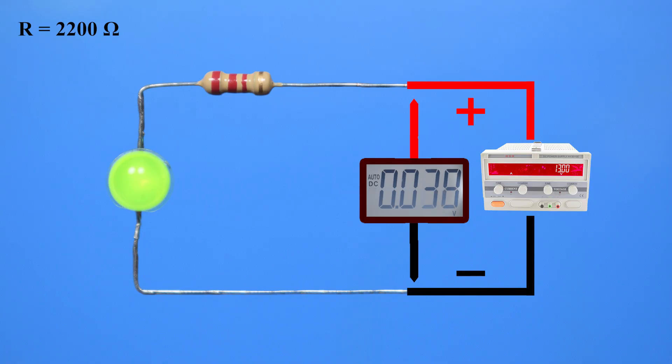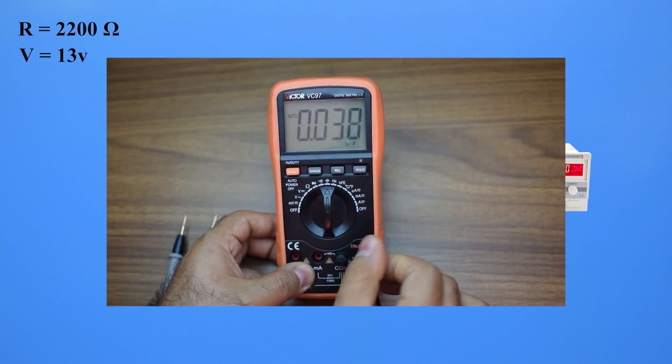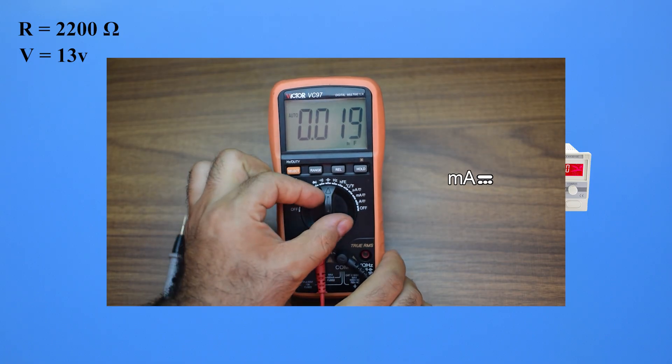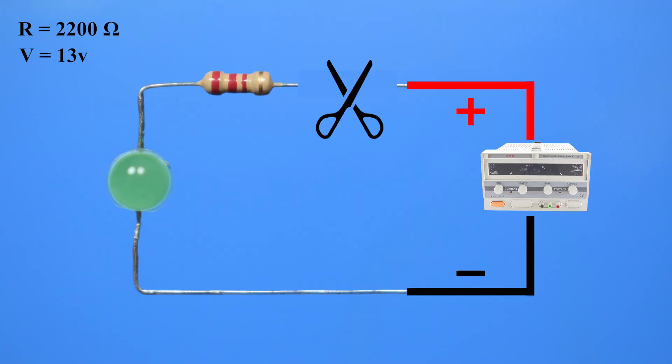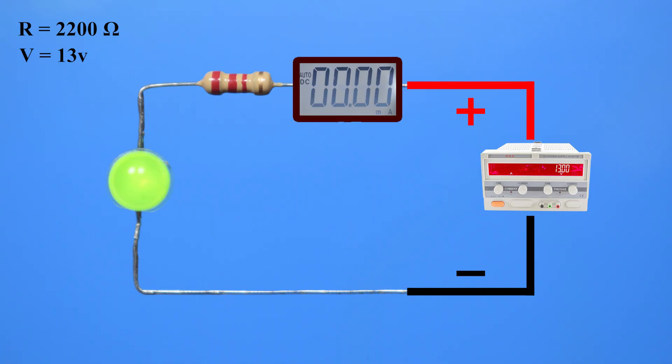Next, we measure the exact voltage of the power supply. Now, let's measure the current. We set the ammeter to the milliampere mode and connect it in series with the circuit. To do this, we disconnect one leg of the resistor from the power supply and place the ammeter in between. Once everything is connected again, we can see the current flowing, and the ammeter shows about 5 milliamps or 0.05 amps. This confirms that the LED is operating safely within its allowed range.